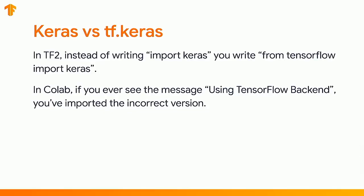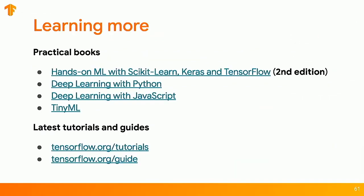If you're working in Colab and are used to using Keras, don't do 'import keras' — instead say 'from tensorflow import keras,' which gives you the version of Keras in TensorFlow 2 that's a superset of regular Keras. If you ever see a message saying 'using TensorFlow backend,' you've imported the wrong version. For books: the first is about TensorFlow 2 and gives you low-level details — only buy the second edition, as the first teaches TensorFlow 1. The second book is by François Chollet and doesn't mention TensorFlow at all, but is outstanding for newcomers; all its code works in TensorFlow 2 by saying 'from tensorflow import keras.' Third is deep learning with JavaScript, and fourth is TinyML by Pete Warden, which is brand new. Thanks very much.